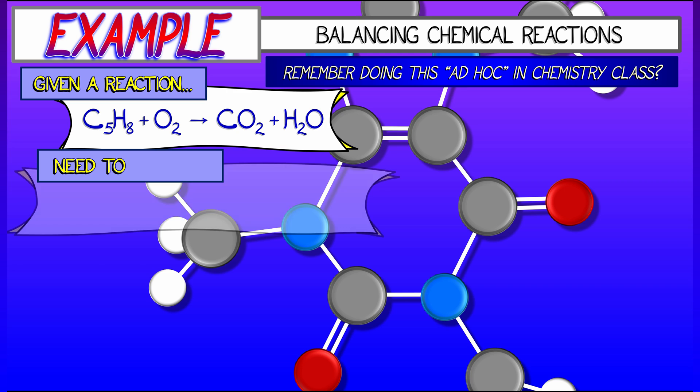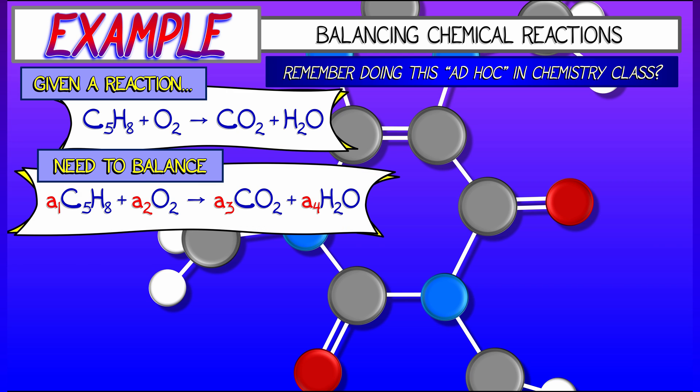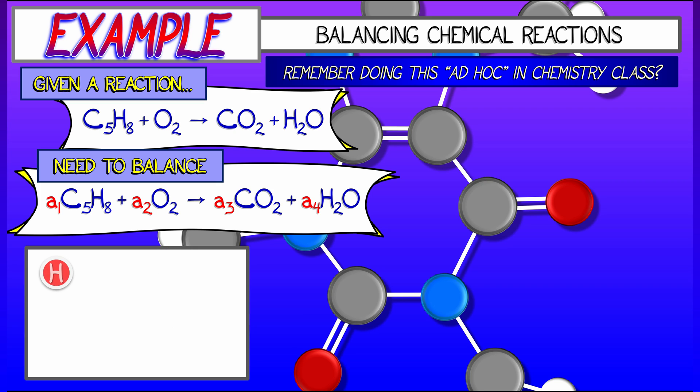Anyhow, what we need to do is put numbers in front of each of these molecules in order to make the number of atoms balance out. Let's call those unknown coefficients A1, A2, A3, A4 for the different amounts.